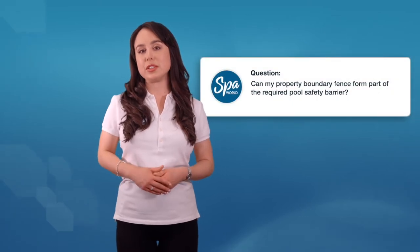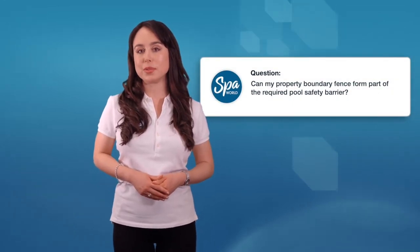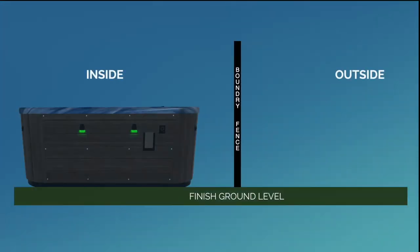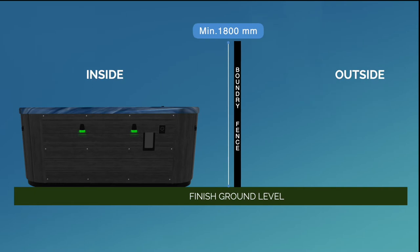Can my property boundary fence form part of the required pool safety barrier? Yes, a boundary fence can act as part of a barrier to a pool if the height of the fence is at least 1800 millimetres on the inside. A boundary fence also needs to have a non-climbable zone with a 900 millimetre radius from the top of the inside of the barrier.